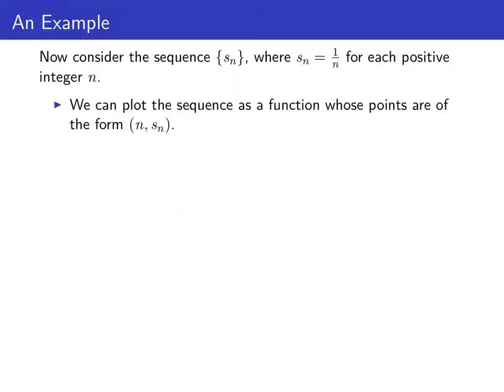Now let's translate this into the sequence world. Let's consider the sequence s sub n, where s sub n is 1 over n for each positive integer n. We can plot the sequence as a function whose points are of the form (n, s sub n). After all, a sequence is a function from the positive integers to the reals.